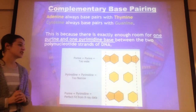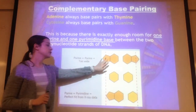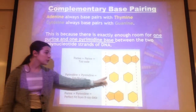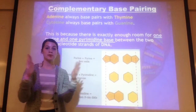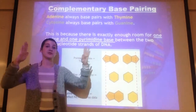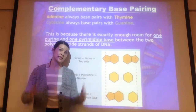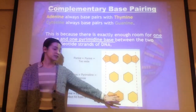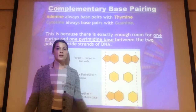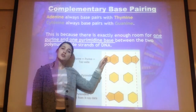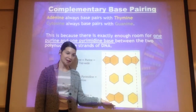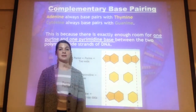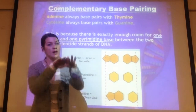If you have two double-ring bases, it's going to be too wide. If you have two single-ring bases, it will be too narrow to fill the space between the sides of DNA. But if you have a purine and a pyrimidine — a double ring plus a single ring — it's going to be just right, like Goldilocks and the Three Bears. We want a purine plus a pyrimidine inside our DNA. So adenine always base pairs with thymine, and cytosine always base pairs with guanine — always.